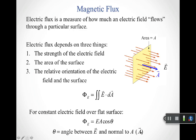We remember that the area vector is normal to the surface itself. So if the surface is running like this, you can see that the area vector is perpendicular to that surface. Theta in this particular equation happens to be the angle between the electric field vector and the area vector.